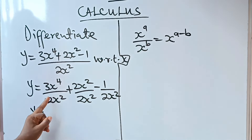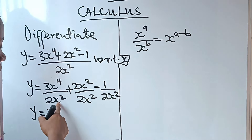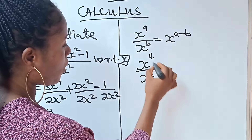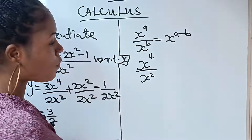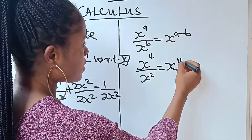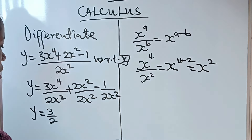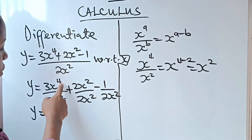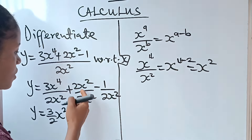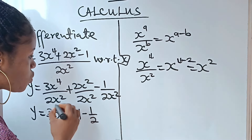So, 3 divided by 2 is going to be 3 over 2. Then x to the power of 4 divided by x to the power of 2: we pick one base and subtract the powers, giving 4 minus 2, which is x squared. Plus, 2x squared divided by 2x squared gives 1. Minus 1 over 2x squared.